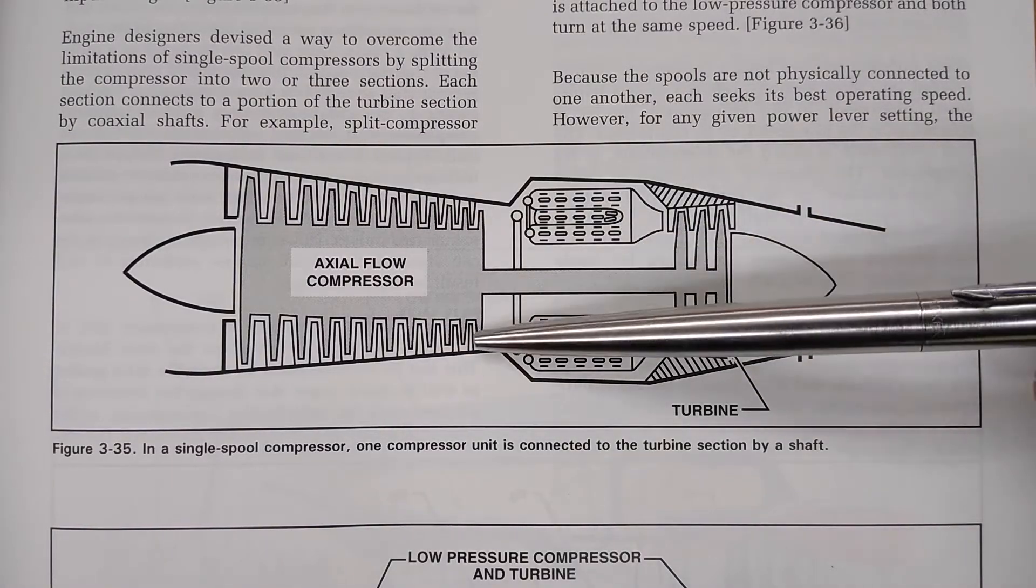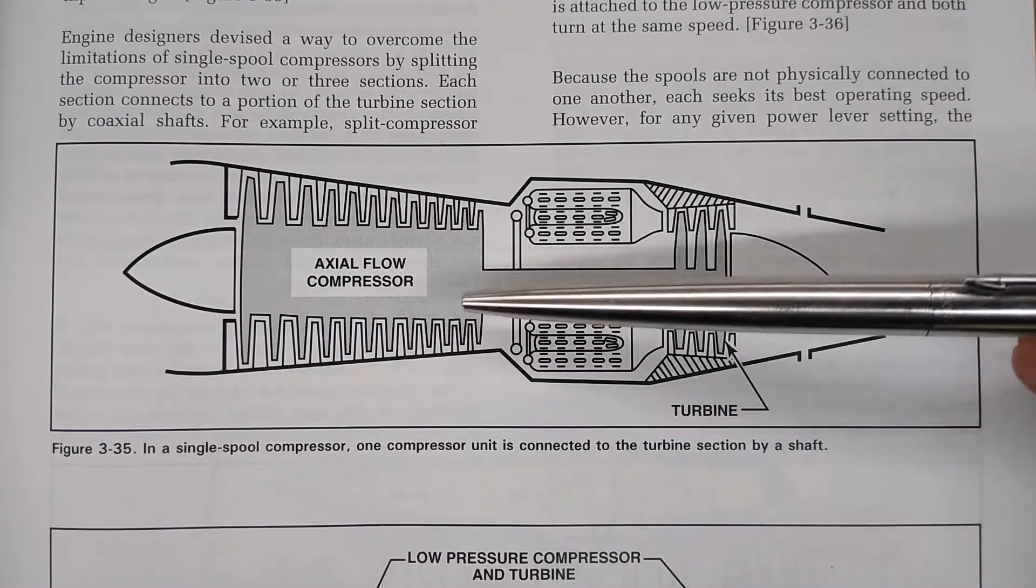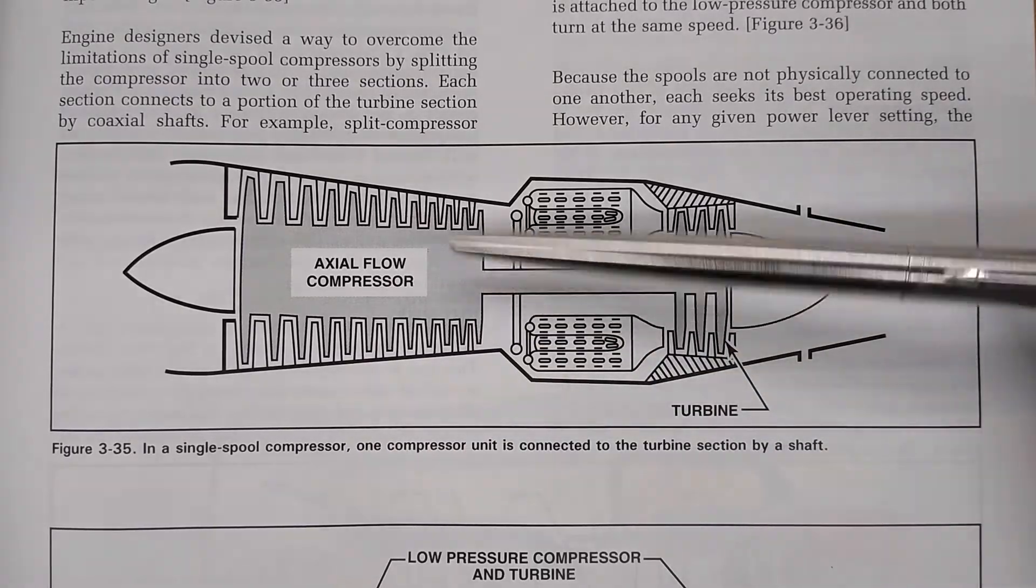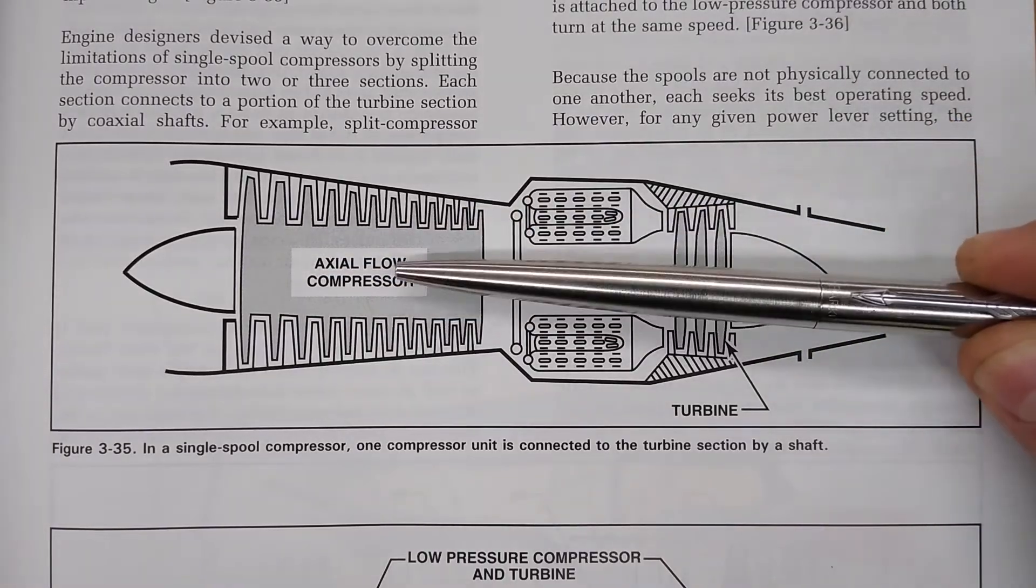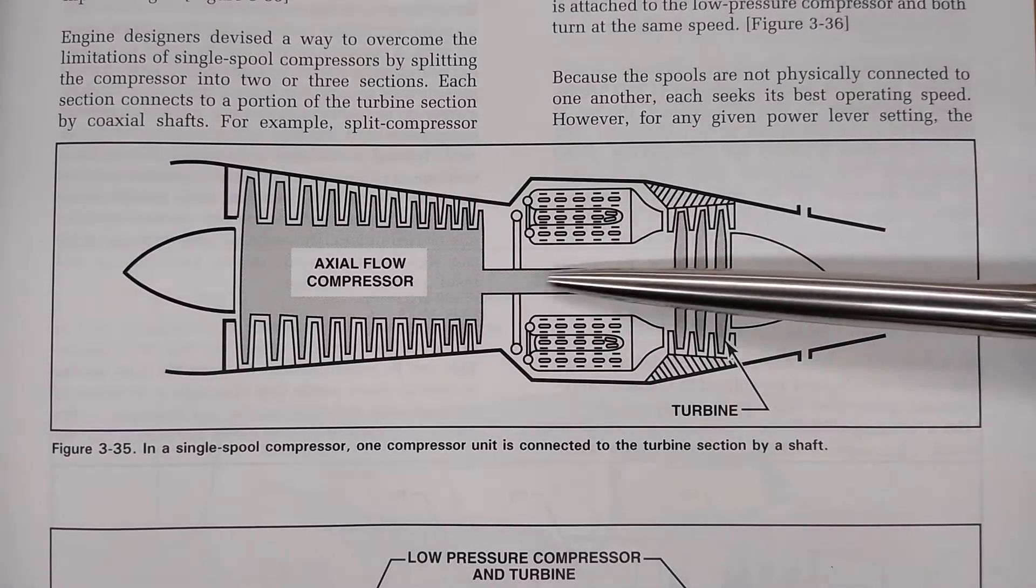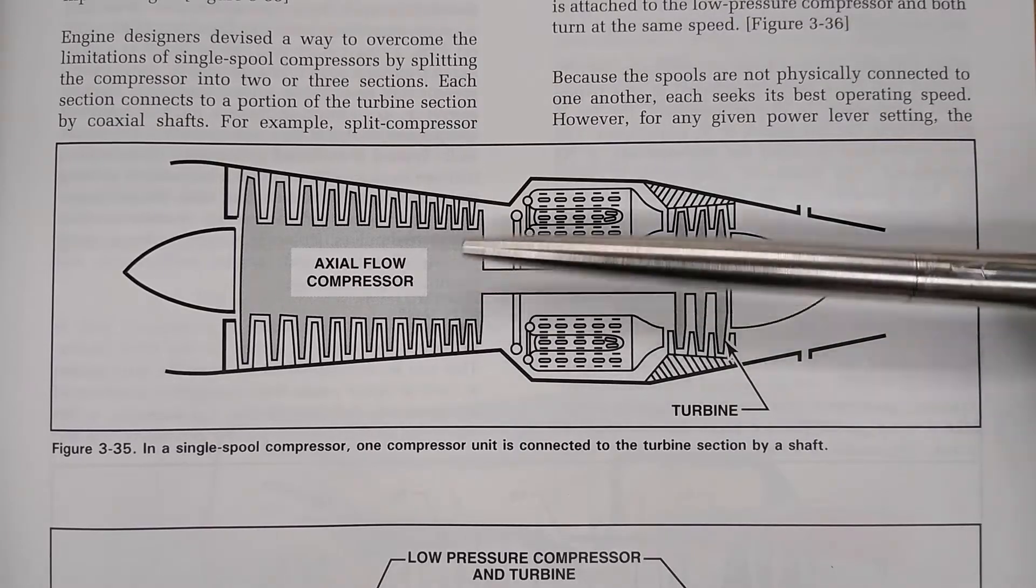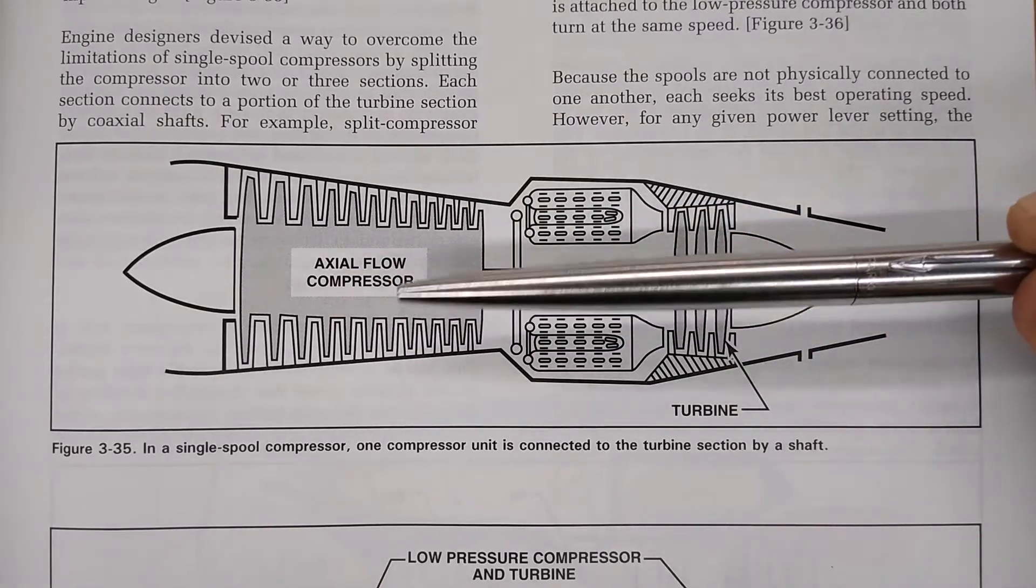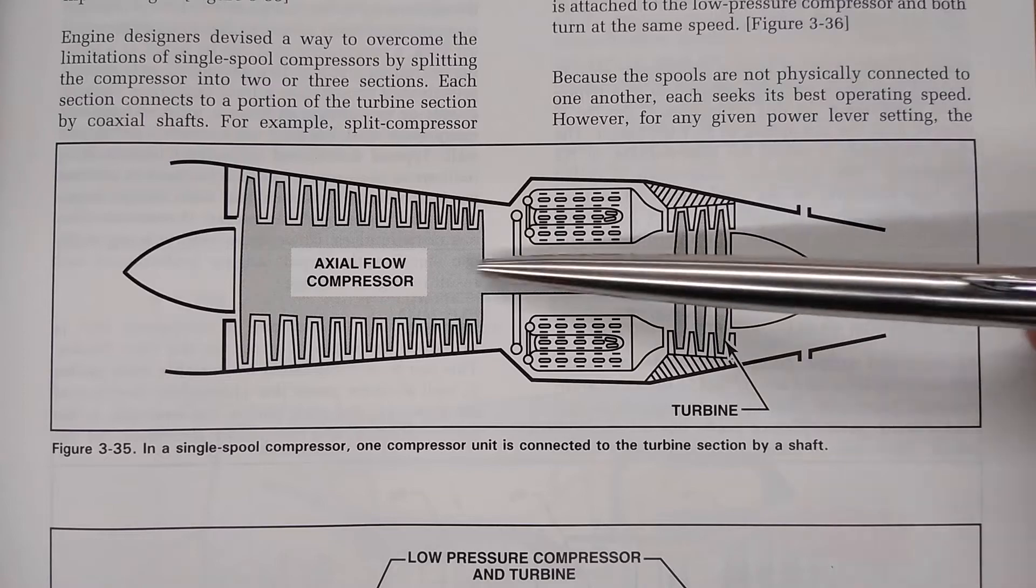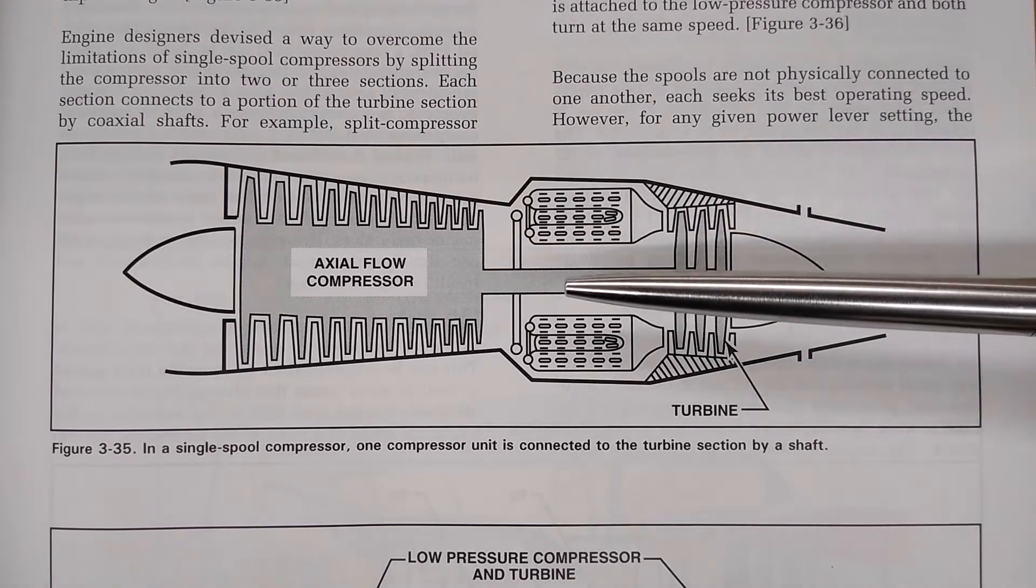What we're looking at now is a single spool jet engine, single spool compressor. That means you have one rotating mass, which is the combination—the whole arrangement of compressor, turbines, and the connecting shaft—all rotating as one unit. That is one spool. That whole assembly is called one spool, a single rotating assembly made up of many different parts built up to make one assembly.